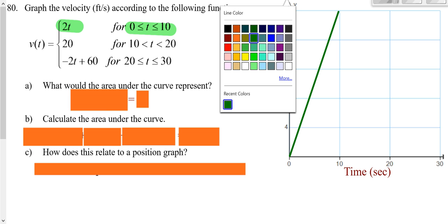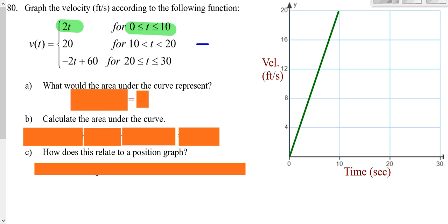Now looking at the next piece, between 10 and 20 we're always at a height of 20, so we have a horizontal line right here.